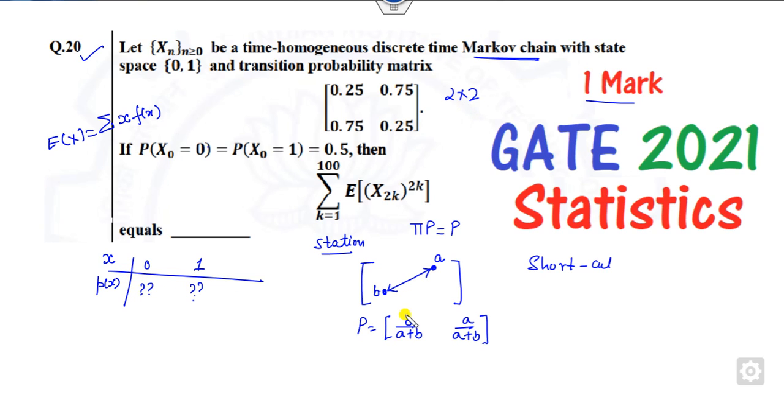So what is the first, this is for the state 0. So what is the stationary probability of 0.75 divided by the sum of this. So that is 0.75 upon 1.50. That is 1 by 2. And again, it is 1 by 2.